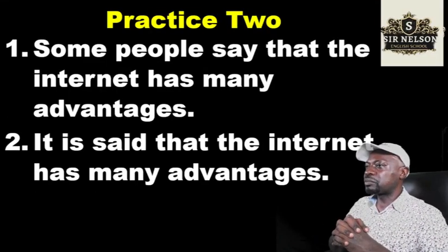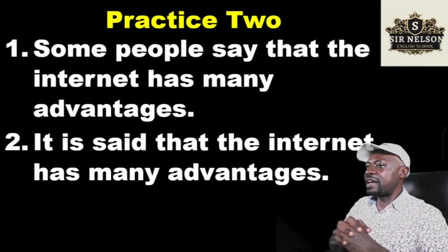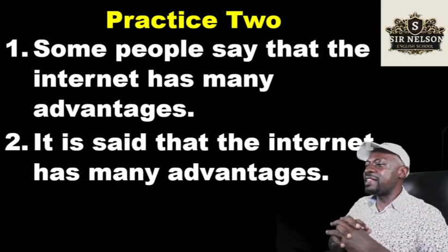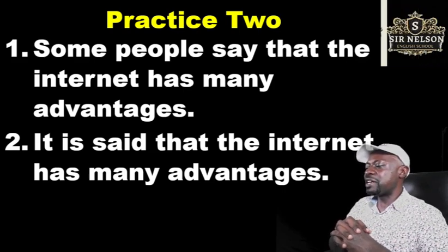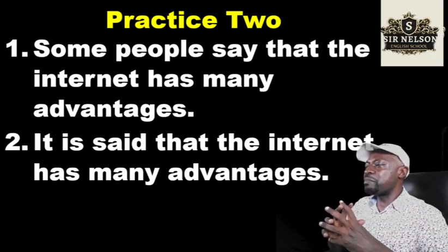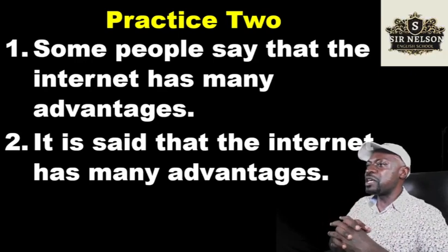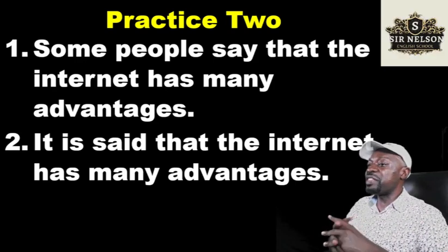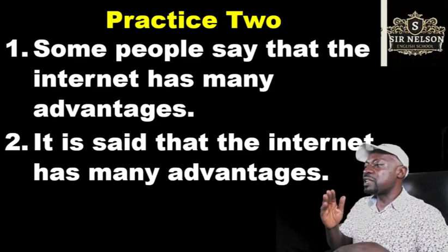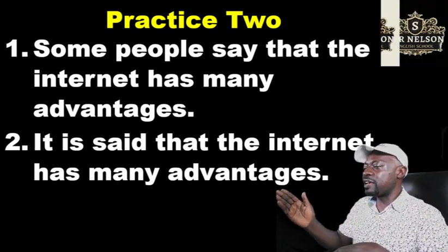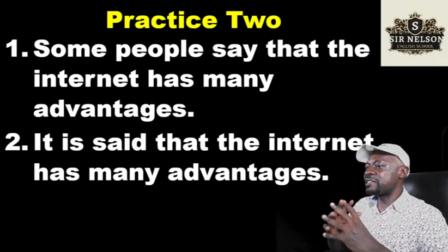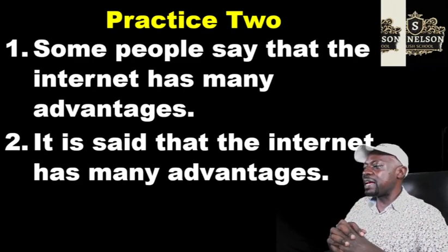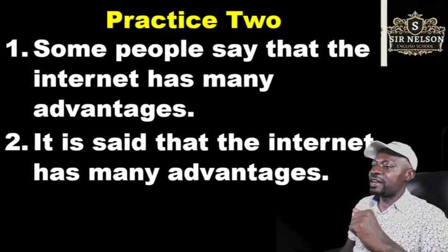Practice two. 'Some people say that the internet has many advantages.' 'It is said that the internet has many advantages.' So you can say 'some people say' — if you begin with 'some people,' then you use the verb 'say.' If you begin with 'it,' then you use the past participle of 'say.' The past participle of 'say' is 'said.' You can choose one: 'It is said that the internet has many advantages.'